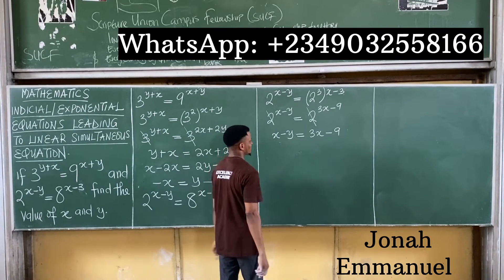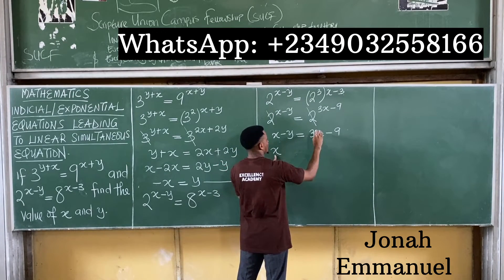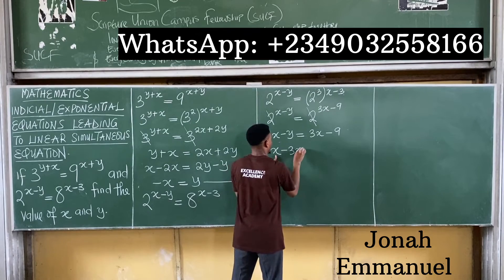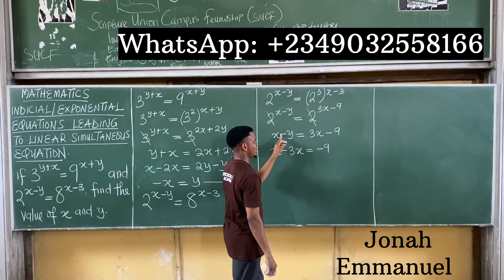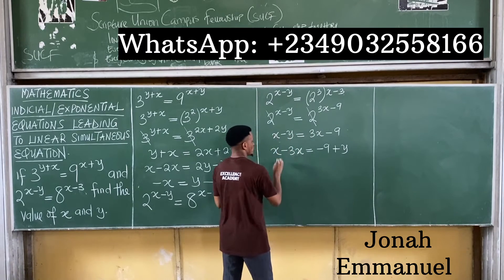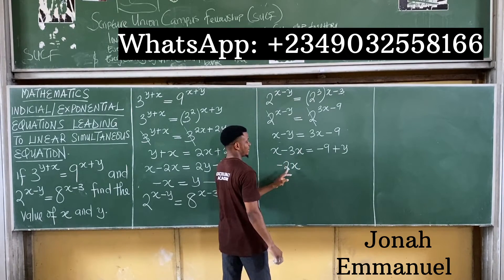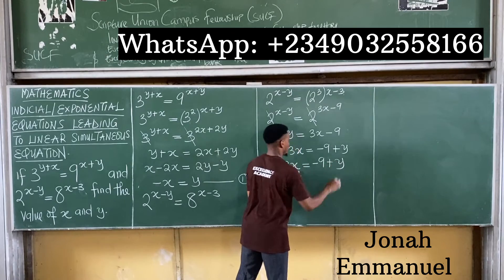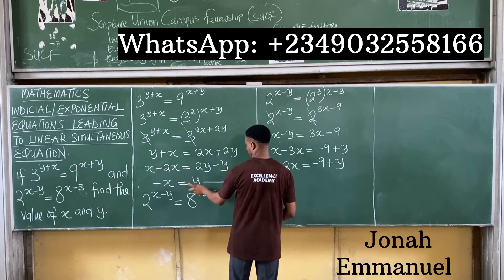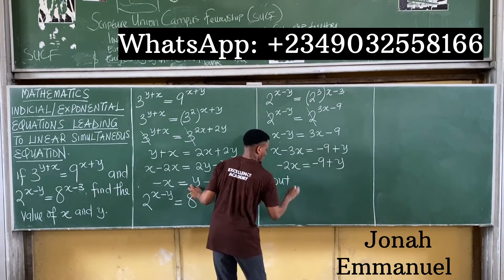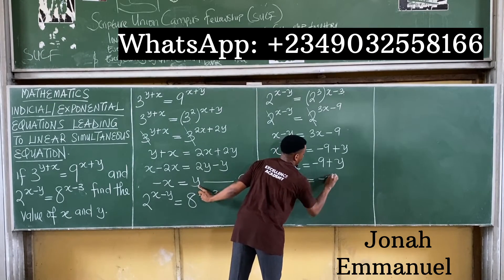Collecting like terms: x minus 3x gives minus 2x, and moving minus y over gives plus y. So minus 2x is equal to minus 9 plus y. At this point, bring back equation 1. From equation 1, minus x equals y, so y equals minus x.